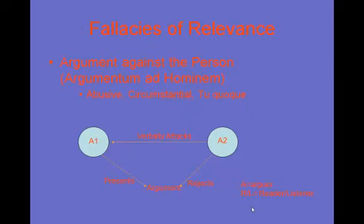The second fallacy of relevance is called argument against the person, the Latin term argumentum ad hominem. There are three types of argument against the person: the abusive form, the circumstantial form, and a form called tu quoque. We will look at each.